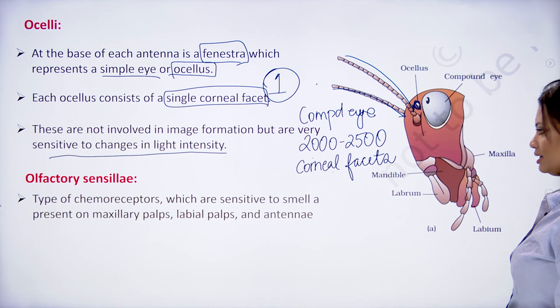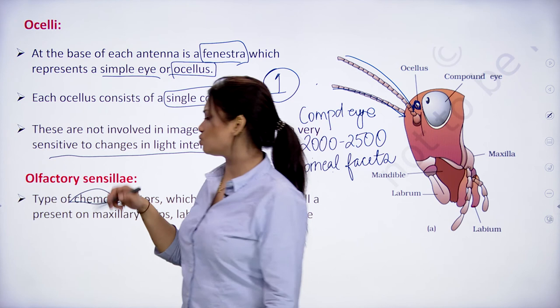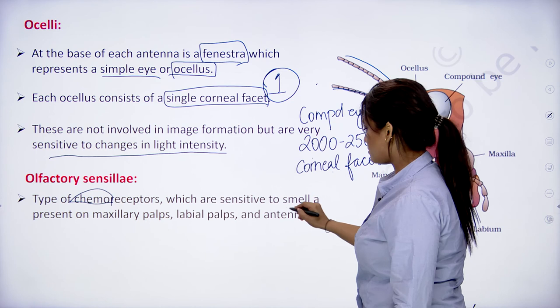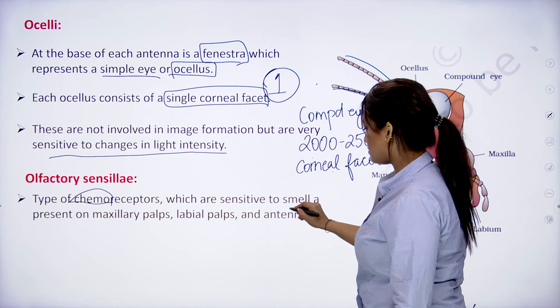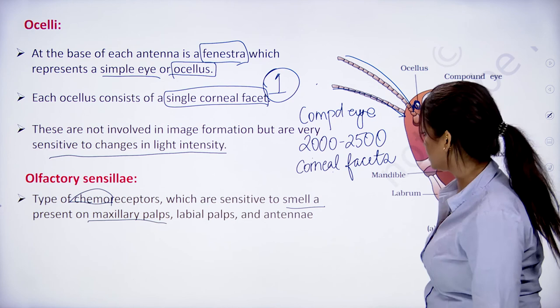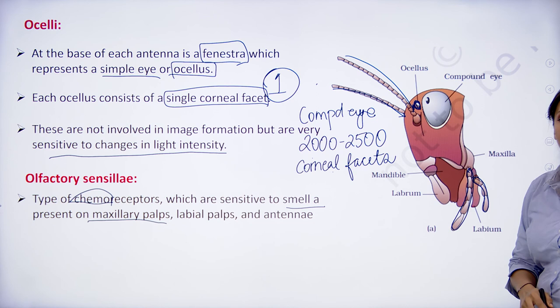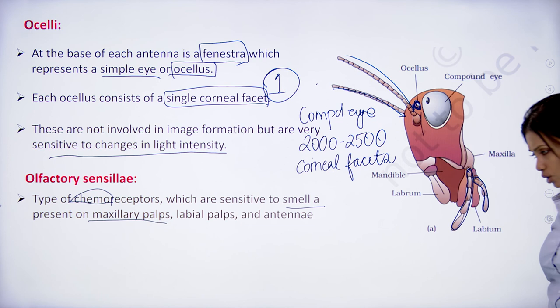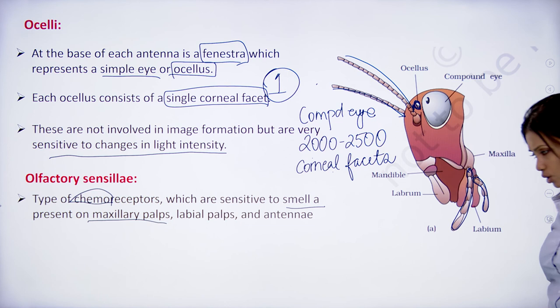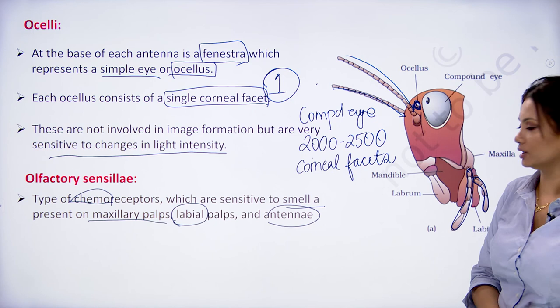Olfactory sensillae are chemoreceptors — they are sensitive to smell. They are present on the maxillary palp, the labial palp, and the antennae.